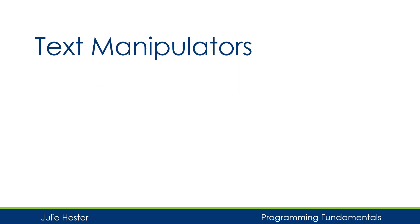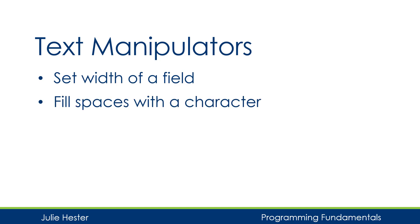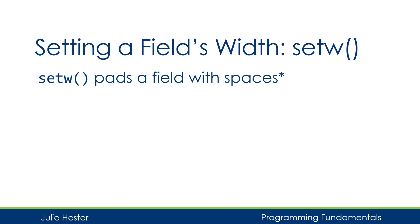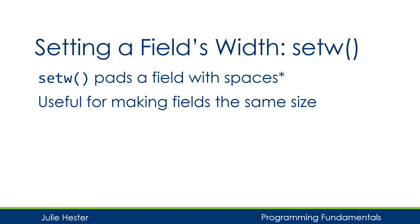Now that we've learned how to change the number of decimal places with floating point numbers, let's see what we can do to manipulate text output on our screen. One thing we can do is set the width of a field. We can fill spaces with a character of our choosing, and we can also align our text either to the left or the right. Let's first look at field width. We're going to use the setw function to pad a field with spaces, which is very useful for making fields the same size.